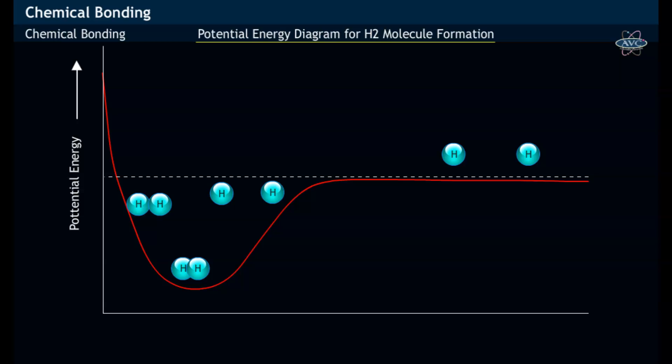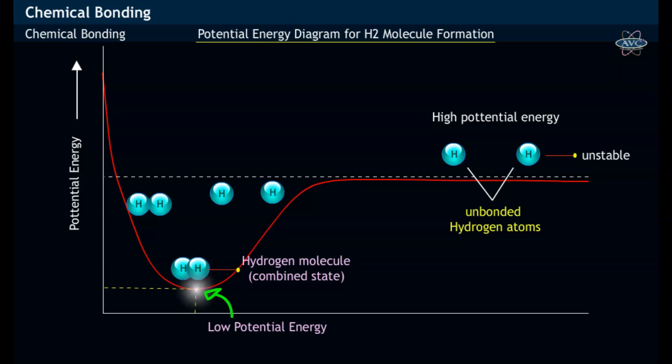In the potential energy diagram for hydrogen molecule formation, it may be noticed that the unbonded hydrogen atoms have high potential energy, that is lower stability, while the combined hydrogen molecule has lower potential energy, having greater stability.